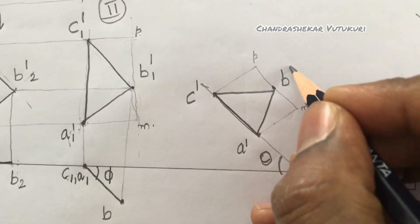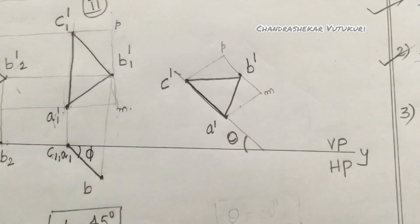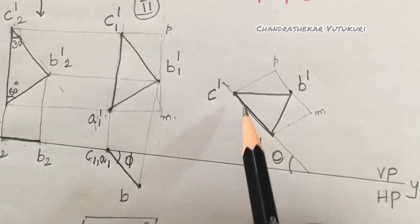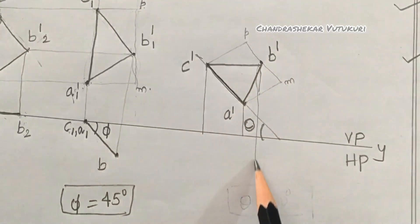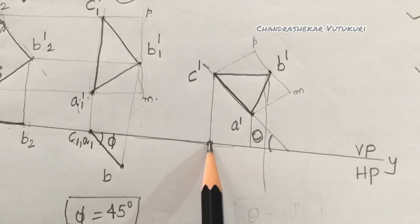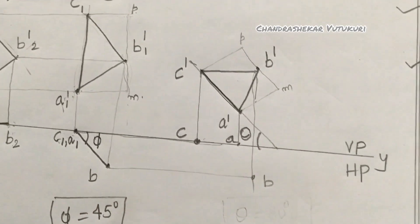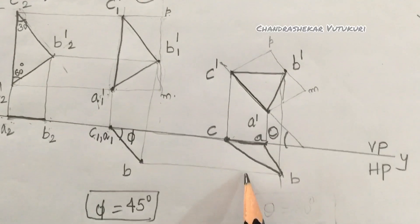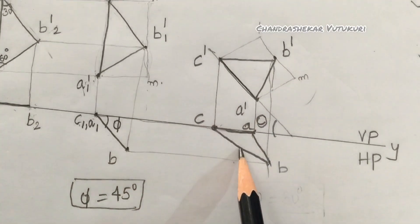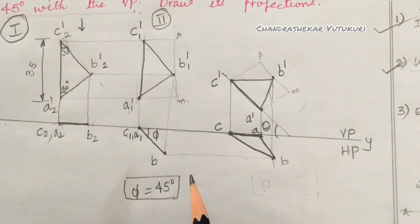You will be getting exactly the 30-60 degree triangle here. My drawings are not to scale, but you will get the exact size with instruments. Mark B-prime within the box. This is how step 3 is worked out from step 2. Project from all corners - C, A, B - drawing projectors, so you get the final top view and front view of the given problem when inclined to HP.